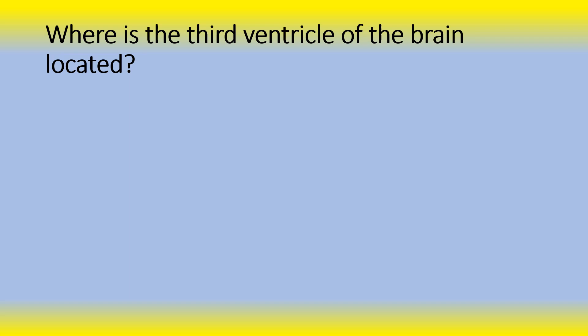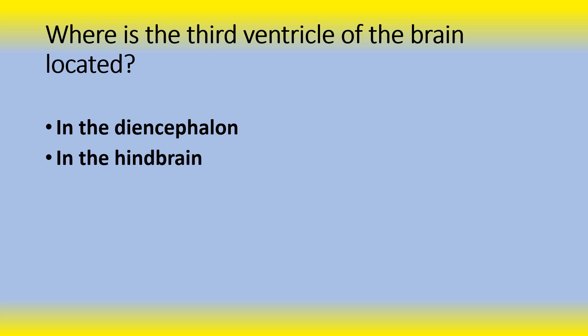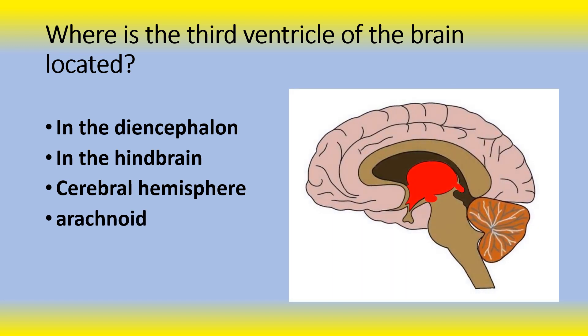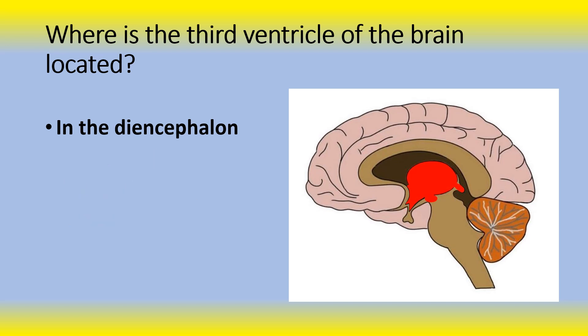Next question: Where is the third ventricle of the brain located? Is it in the diencephalon, in the hindbrain, in the cerebral hemisphere, or in the arachnoid? The answer is the diencephalon. The third ventricle of the brain is a narrow funnel-shaped cavity located in the midline between the two hemispheres of the diencephalon of the forebrain, meaning it lies in the center of the brain. It makes up the central part of the brain and facilitates communication between other ventricles.